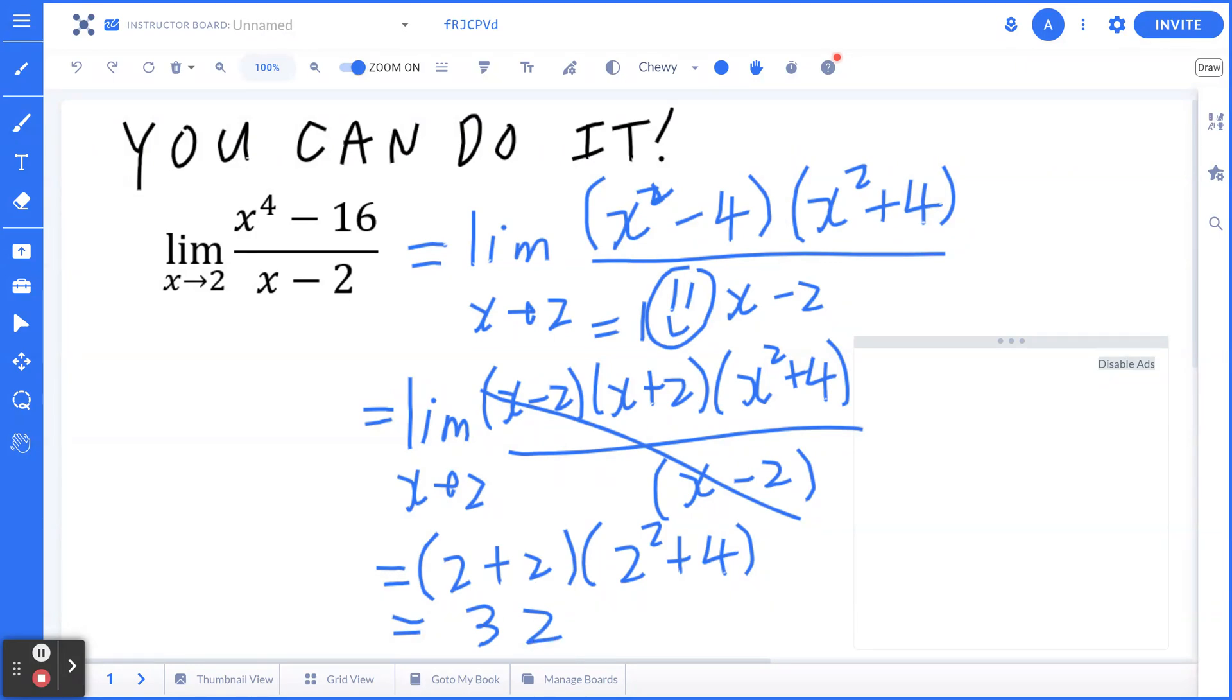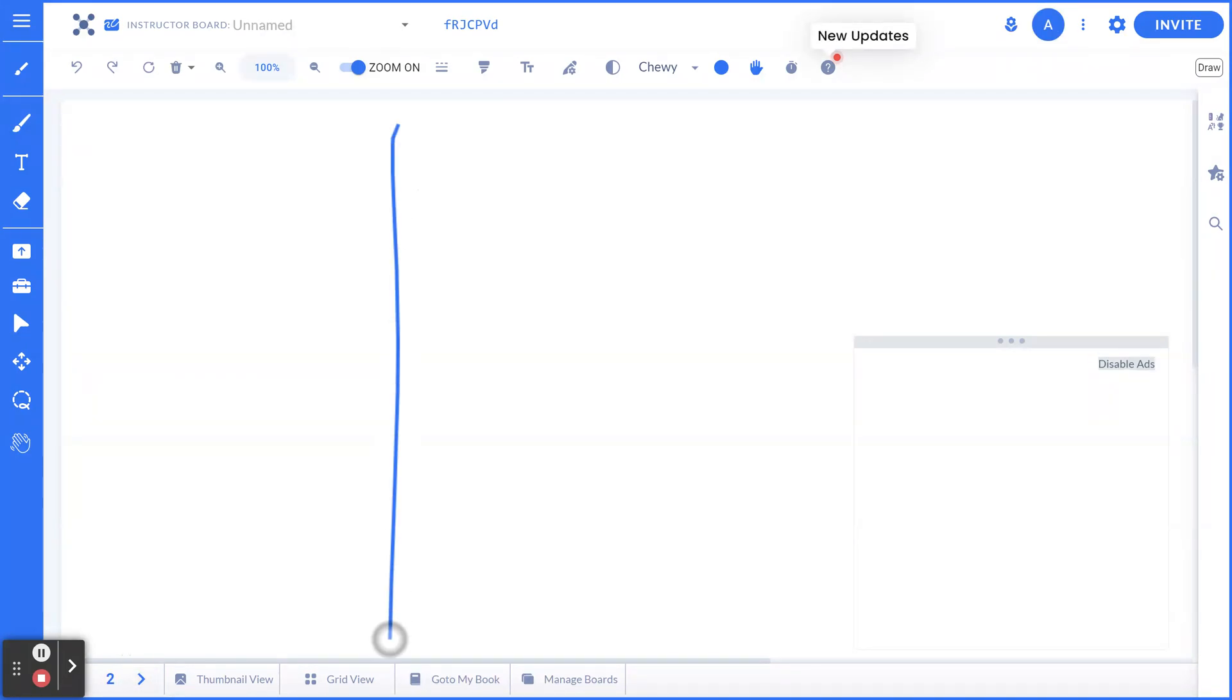Now, again, for most students, they may just stop here and say, I found the answer. The answer is 32. This is good enough. What I would suggest to everybody is to spend one extra minute and draw a graph. If you're doing it right, then your graph should be able to support that.